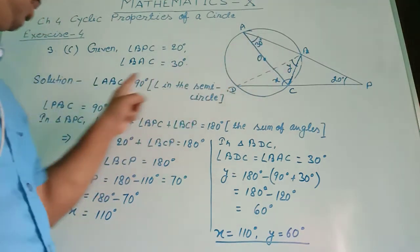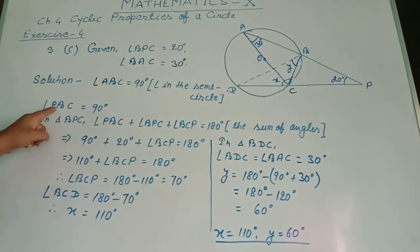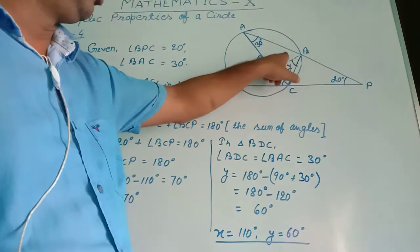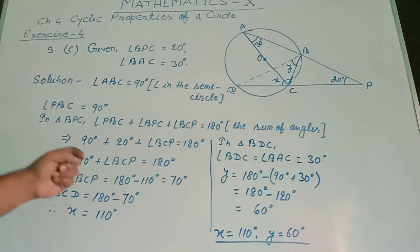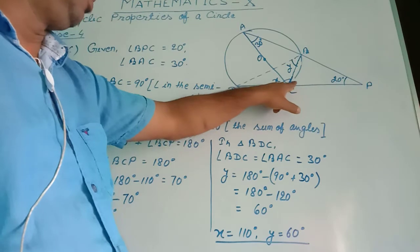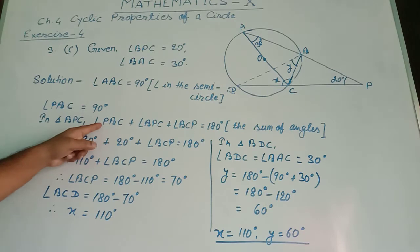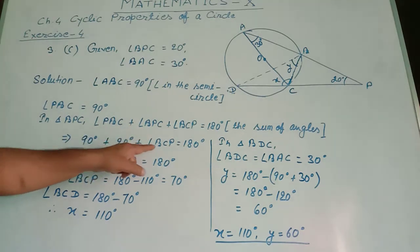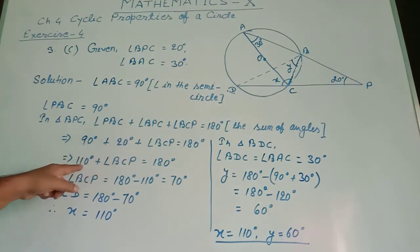Angle ABC is 90 degrees — angle in a semicircle. So angle CBP, or angle PBC, equals 180 minus 90 degrees, giving PBC equals 90 degrees. In triangle BPC, angle PBC plus angle BPC plus angle BCP equals 180 degrees. With PBC equal to 90 degrees and BPC equal to 20 degrees, the sum is 110 degrees plus BCP equals 180 degrees.